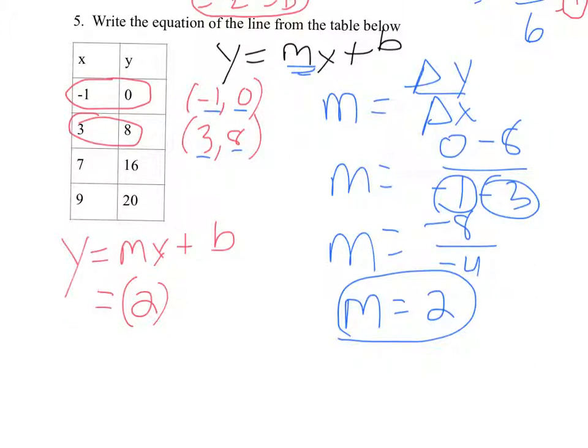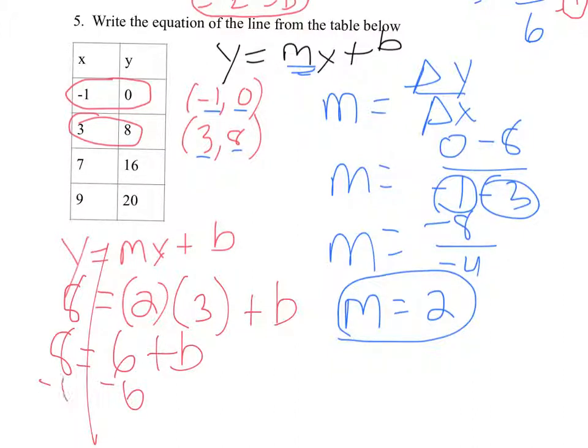And here we can just choose any one of these coordinates on the table and plug it in for x and y. I'm going to just pick 3 and 8 just because I feel like it. So I'm going to plug in 8 for y and I will plug in 3 for x and then put my plus b down. So a good old-fashioned equation. 8 equals 6 plus b, minus 6 to both sides.